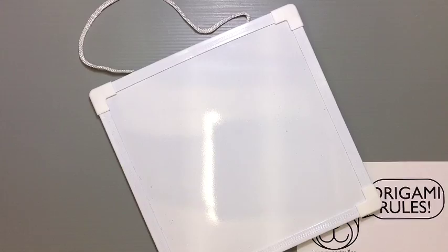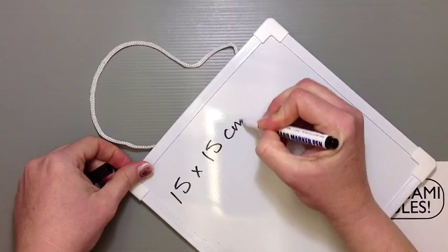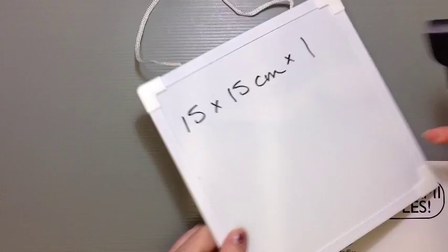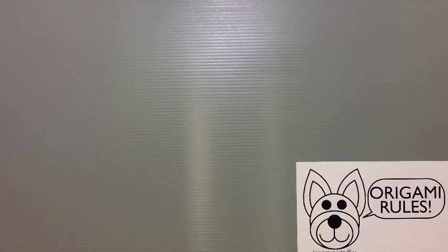We're going to be using standard origami paper, 15 by 15 centimeter. Of course you can use any size paper and it'll just give you a different size fishy when you're done. I'll tell you the dimensions when we're finished. There's a couple different ways of cutting it so you can get different variations of fish, and I'll show you two different versions so you can have variety if you're making a whole bunch of little fishies.